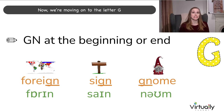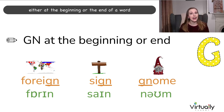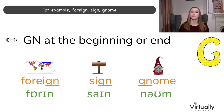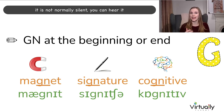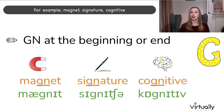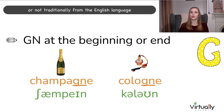Now we're moving on to the letter G, which is silent in quite a few situations. The G is silent when it is next to an N, either at the beginning or the end of the word. For example: foreign, sign, gnome. If the GN is in the middle of the word, it is not normally silent — for example: magnet, signature, cognitive. The only exceptions are words typically from French, such as champagne or cologne.